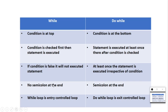Let's see the difference between while loop and do-while loop: In while loop, the condition is at the top; in do-while, the condition is at the bottom. In while loop, condition is checked first then the statement executes; in do-while, the statement executes at least once then the condition is checked. If the condition is false in while loop, the statement won't execute; in do-while, at least once it will execute regardless. While loop doesn't need a semicolon after the condition; do-while requires a semicolon at the end. While loop is entry control; do-while is exit control. Friends, I hope you understood the difference between while loop and do-while loop. Thank you, keep practicing.